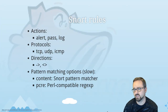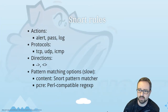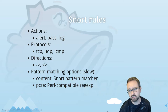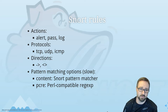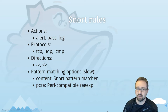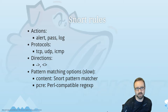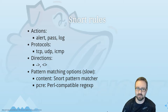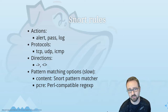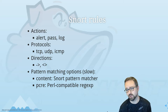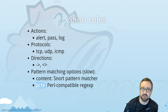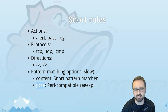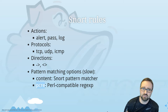If all conditions are true then it generates the alert and whatever action takes place. Actions are typically alert, pass, or log. Protocols can be TCP, UDP, or ICMP. Directions can be one-directional or any direction. Pattern matching is slower than most other rule types. Content matching uses SNORT's pattern matching, which is fairly straightforward — you're mostly looking for specific bytes. Compared to Perl-compatible regular expressions, which have much more expressiveness, allowing you to match complicated patterns like certain numbers of repetitions of a string.